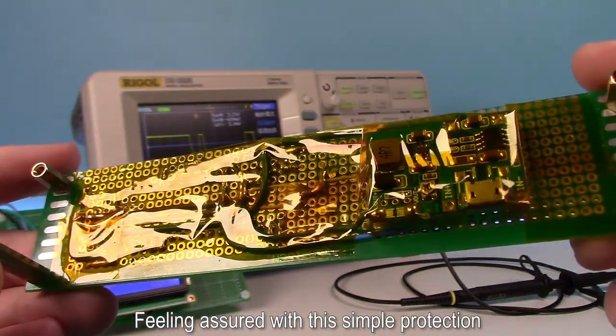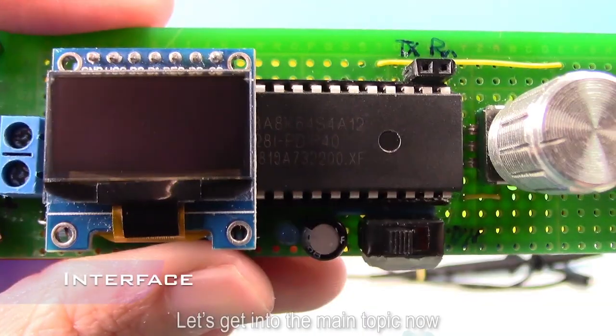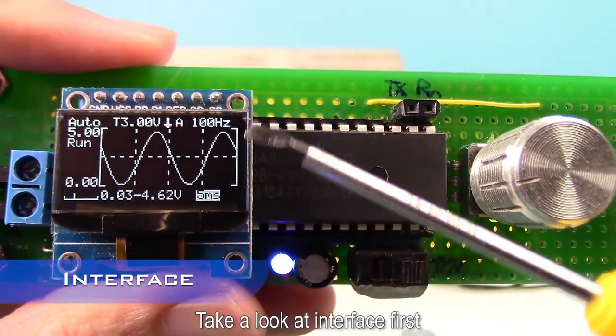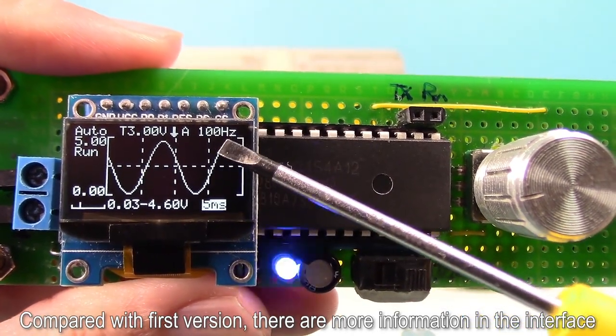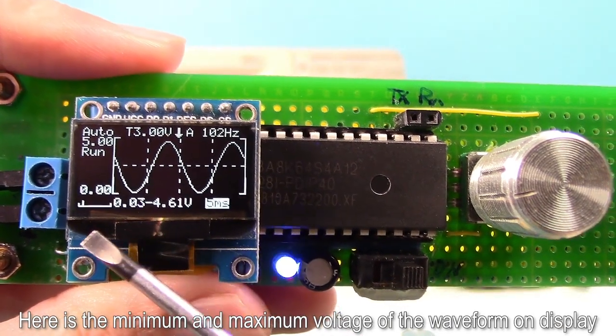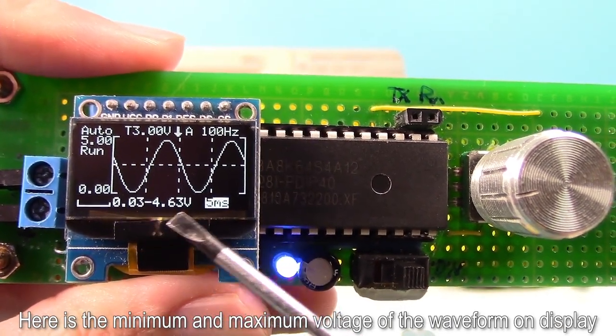Feeling assured with this simple protection. Let's get into the main topic now. Take a look at the interface first. Compared with first version, there are more information in the interface. Here is the minimum and maximum voltage of the waveform on display.